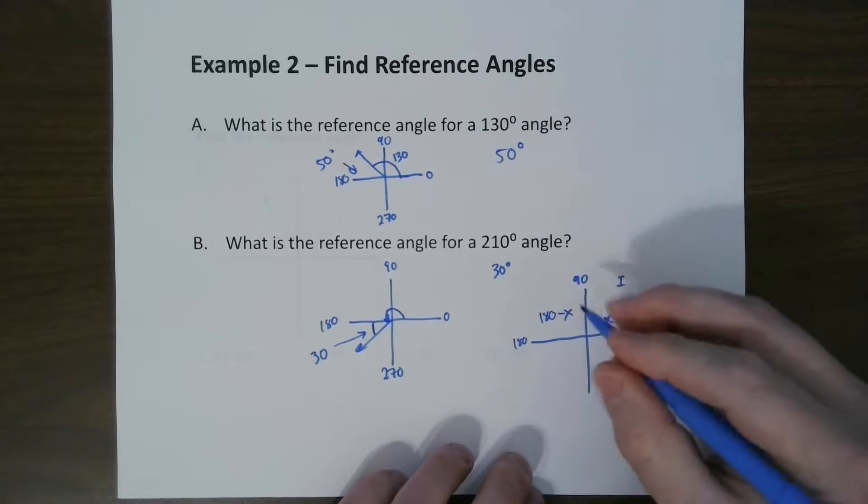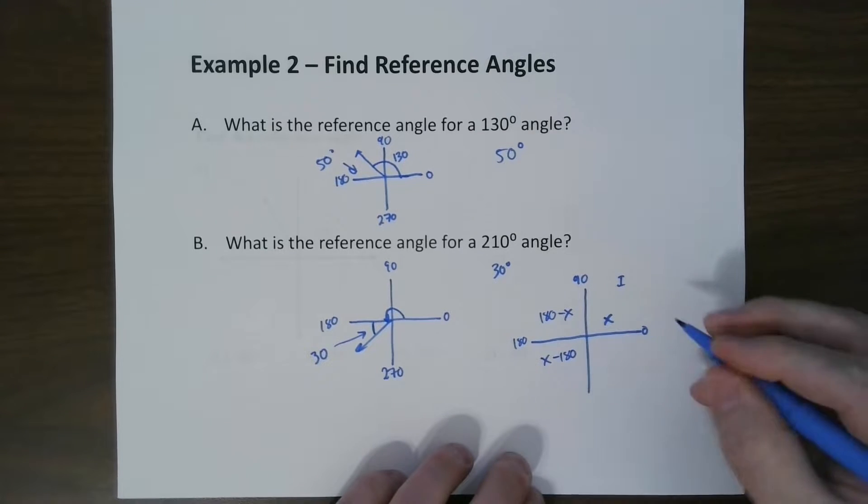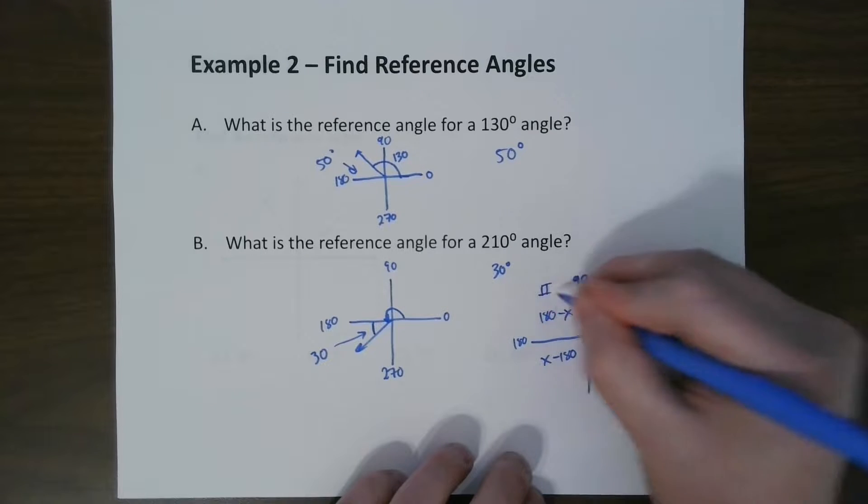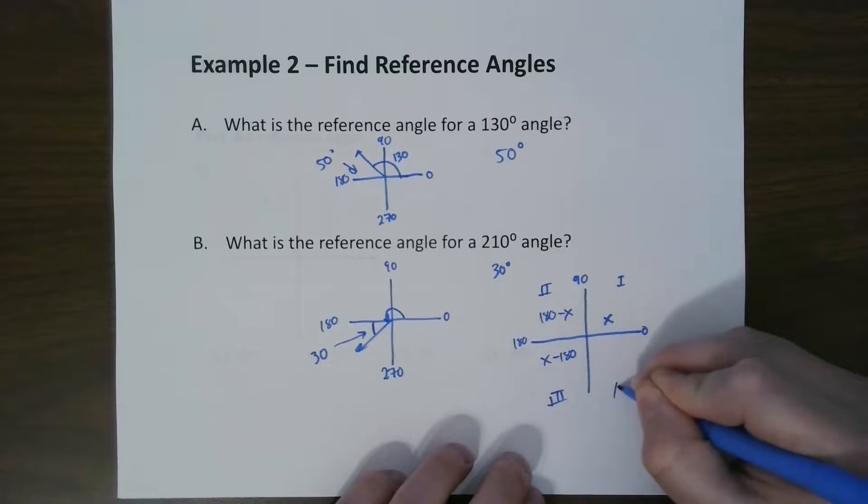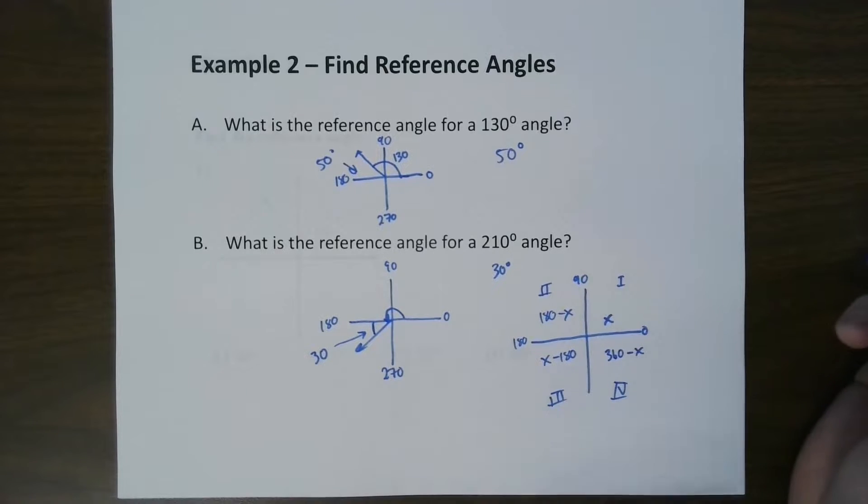If it's here, we go x minus 180. And if it's in here, this quadrant, quadrant 4, then it's 360 minus x. And that's basically the pattern that you use.